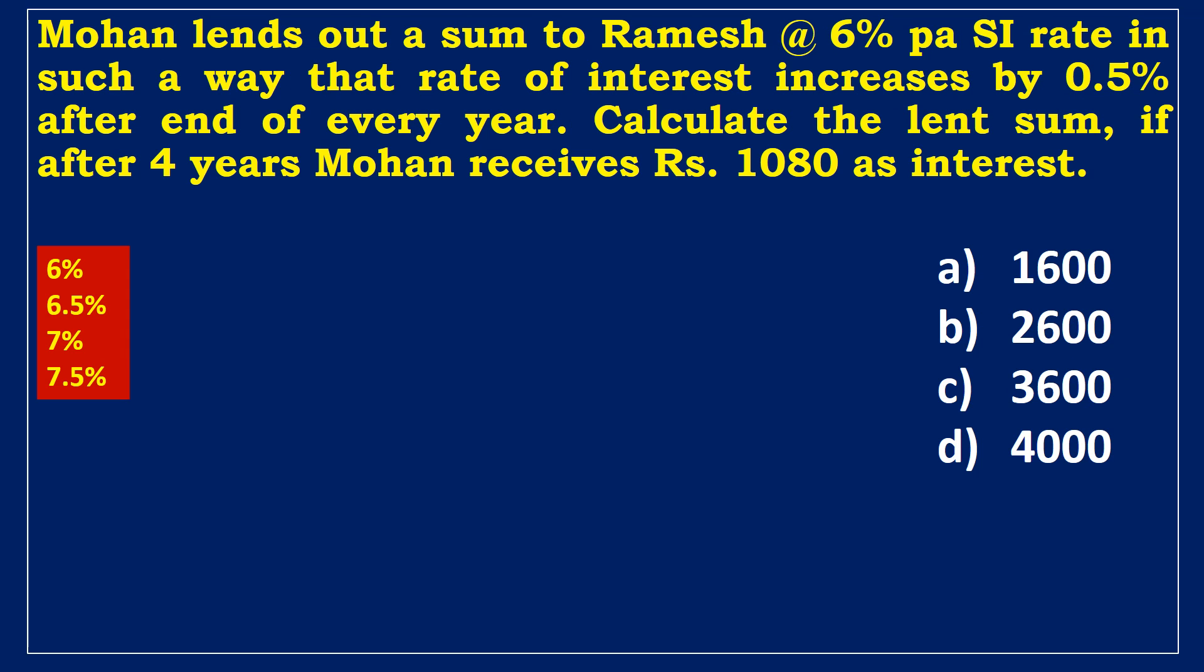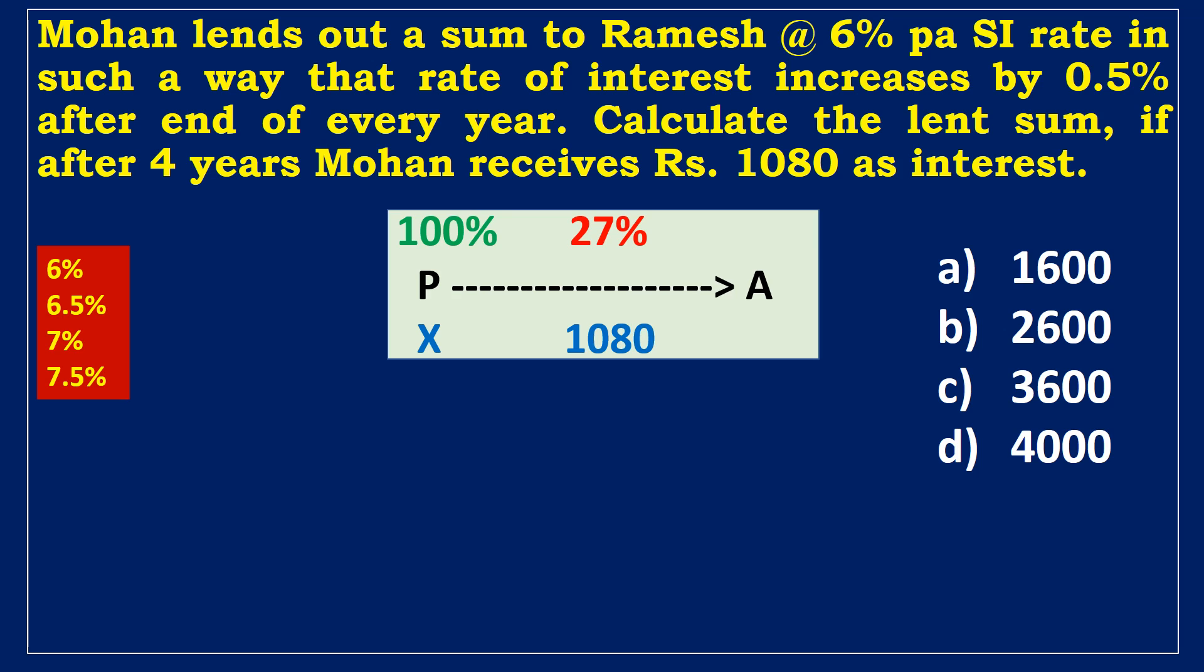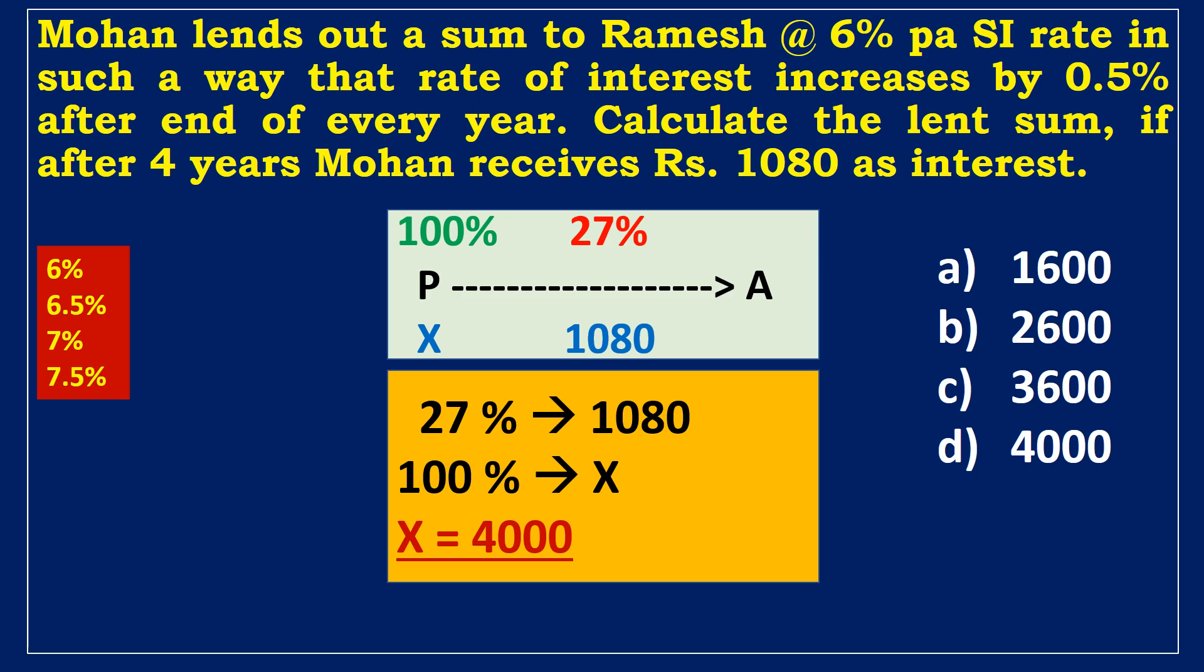Let us now look at an example in simple interest. Mohan lends out a sum to Ramesh at 6% per annum simple interest rate in such a way that the rate of interest increases by 0.5% after the end of every year. Calculate the lent sum, if after 4 years Mohan receives 1080 rupees as interest. Assume the principal is 100%. Given that the interest rate is 6%. Every year, the interest rate rises by 0.5. Then the interest rates for the following four years are 6%, 6.5%, 7%, and 7.5% respectively. The overall interest rate should be 27%, which is equal to 1080 rupees as interest. To solve this problem, we can use the proportionality concept to find the lent sum. Based on the information given, we can set up two equations. If 27% equals 1080, then 100% equals x. So we can set up a proportion. 27 divided by 100 equals 1080 divided by x. We can solve for x by cross multiplying. Then the lent money is 4,000 rupees.